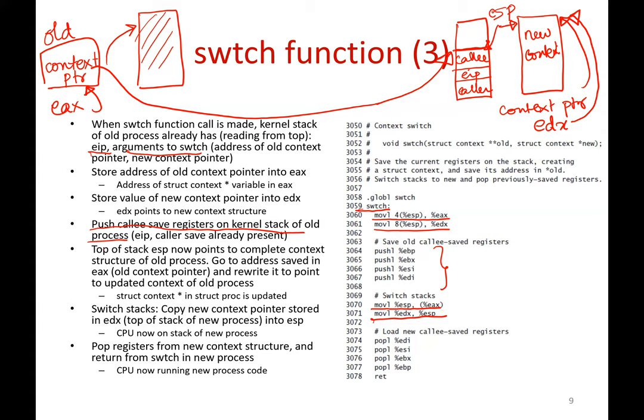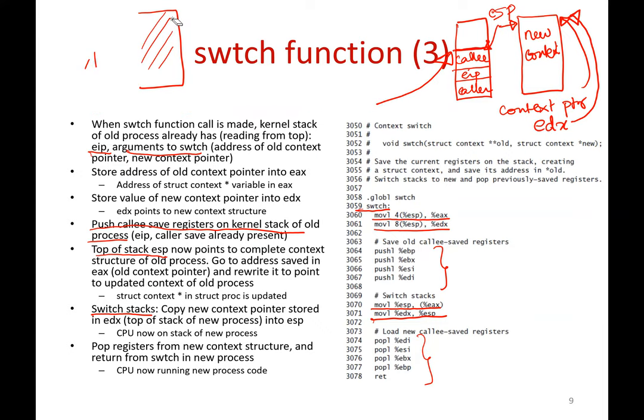After the stack switch, you simply pop all the callee-save registers, then return. The return pops the EIP and caller-save registers and everything. Your context switch is complete. In essence, the call to switch freezes a process — a process is executing some code, you call switch and pause there, and later when switched back in, you return and continue from exactly where you left off.